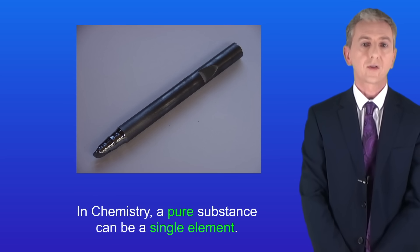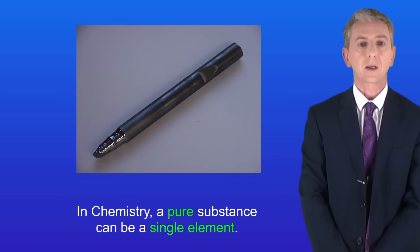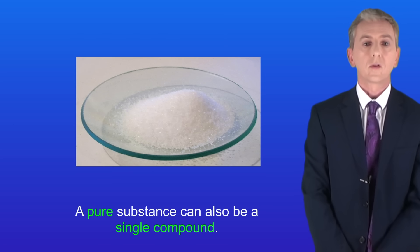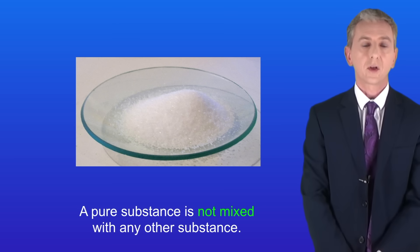Now in chemistry a pure substance can be a single element. So for example I'm showing you here a rod made out of pure silicon. A pure substance can also be a single compound. So this shows a sample of pure sodium chloride. The key point is that a pure substance is not mixed with any other substance.